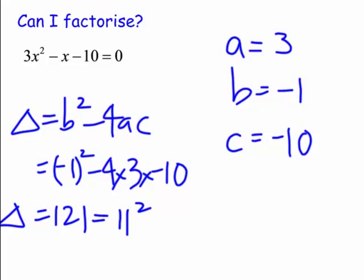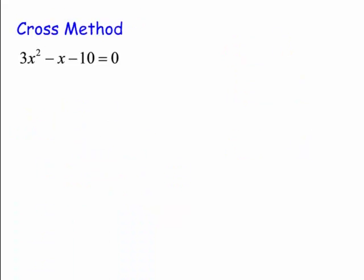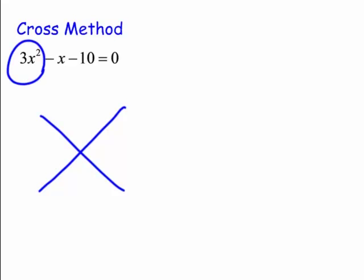I'm going to suggest that we always use the cross method to factor these. To factor via the cross method, we draw a cross. We look at the 3x squared term — its factors go down one side. Since 3x squared is prime in this sense, we write 3x and x. The factors of minus 10 go down the other side.